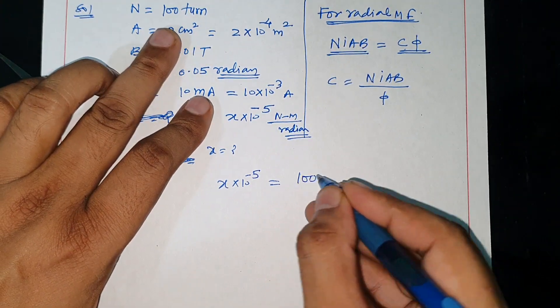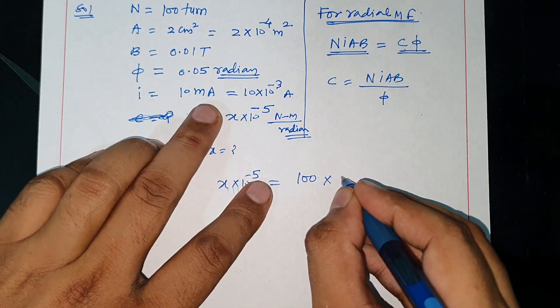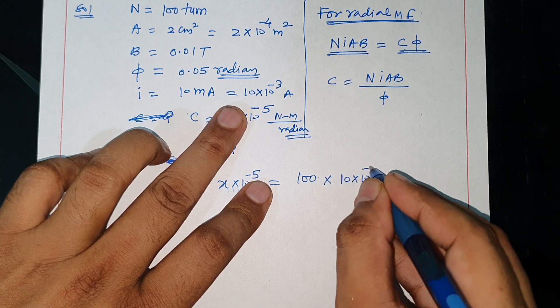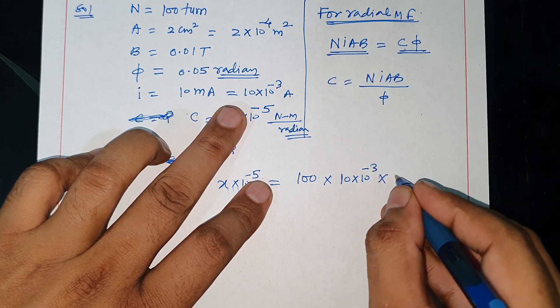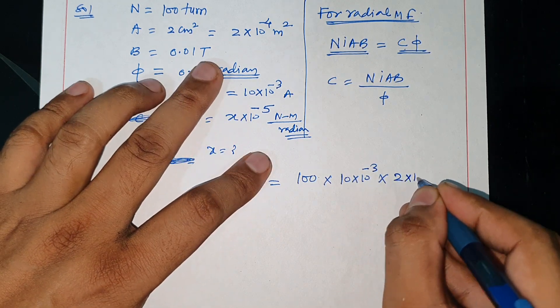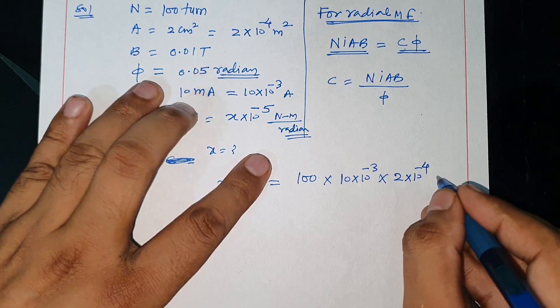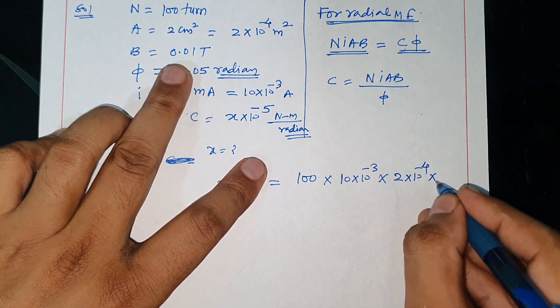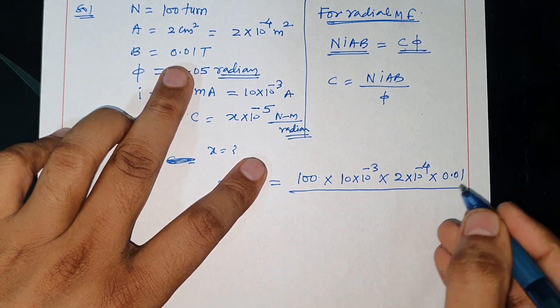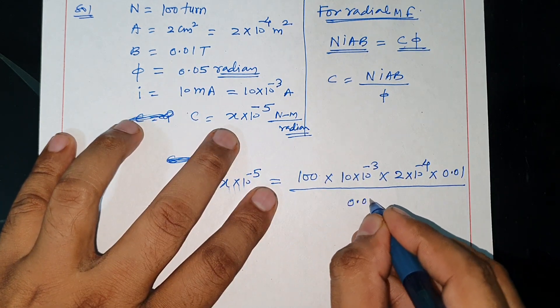N value is 100, I value is 10 into 10 power minus 3, A value is 2 into 10 power minus 4, B value is 0.01.